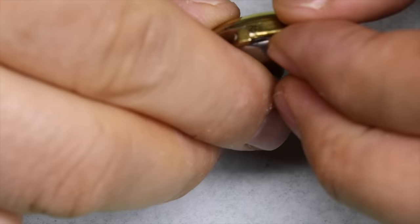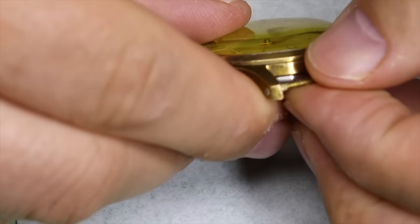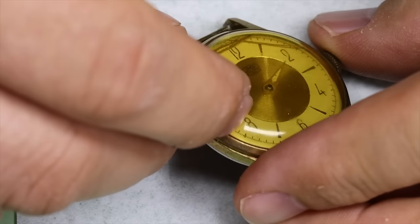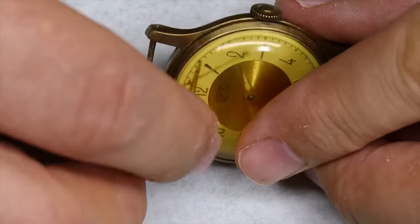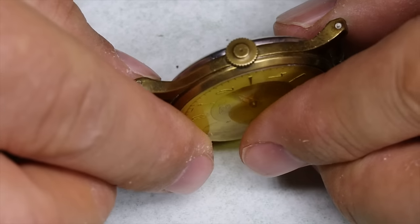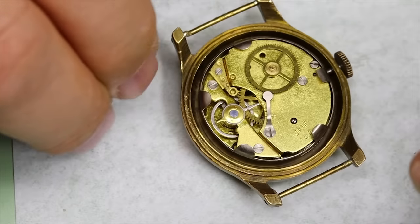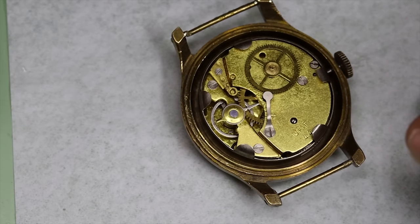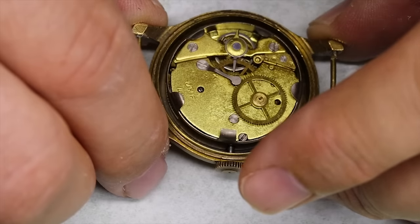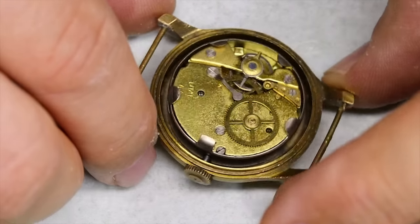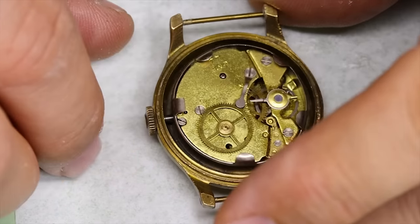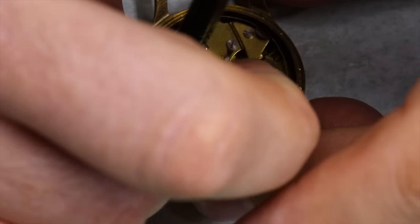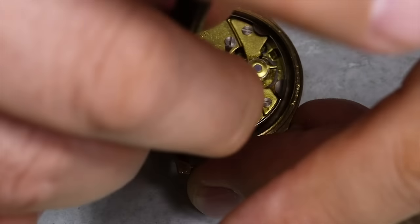Let's have a look. You see the crystal is completely yellowed. A couple of the hands have fallen off and the watch is not running. Let's open it up and see what we have here. This is a pin pallet watch or a pin lever watch, as some call it. Also known as a Roskopf watch.